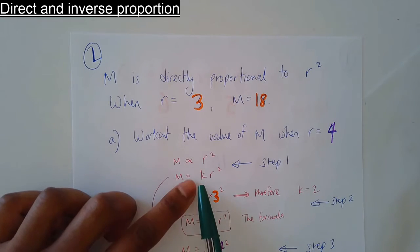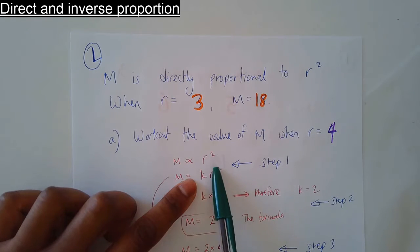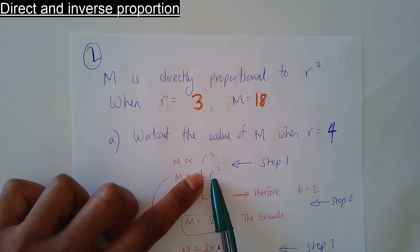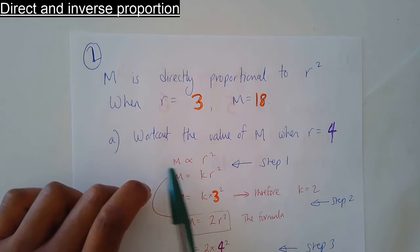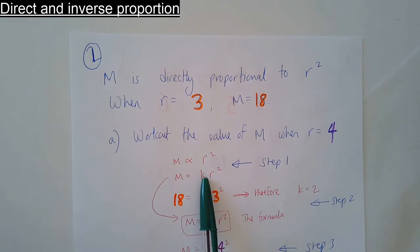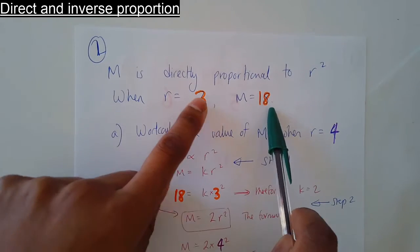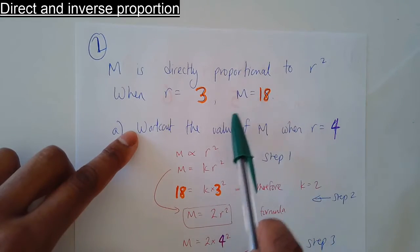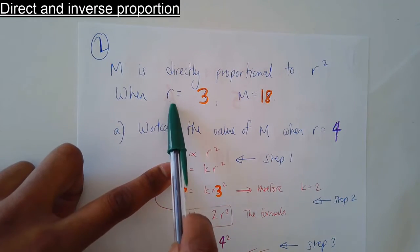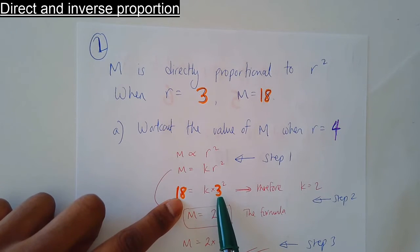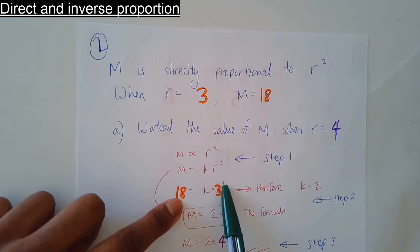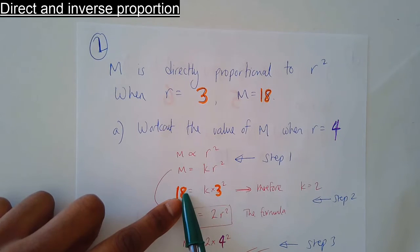m equals k times r squared. The k comes in front — not above the r squared, because putting it above would make it inversely proportional. In front makes it directly proportional. Now we need to find the value of k using the information: replace m with 18 and r with 3. You get 3 squared, which is 9. 9 times something to be 18.